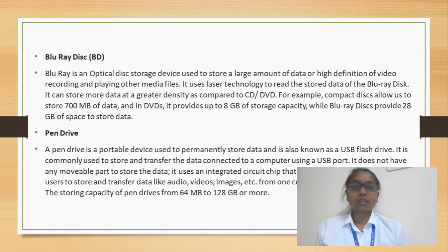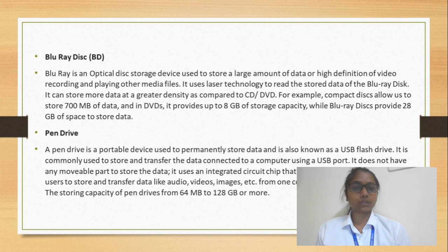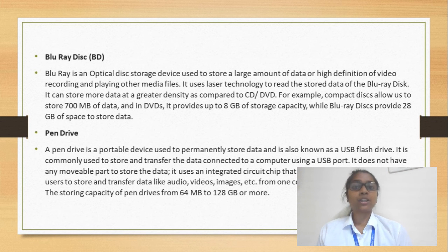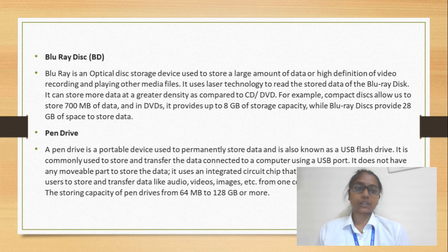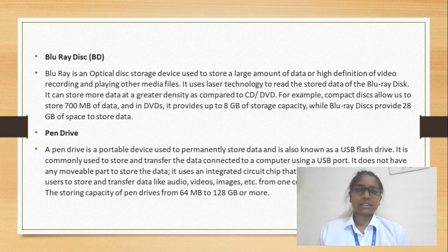The third optical storage device is Blu-ray Disc, which is similar to CD and DVD. The difference is that it has a much larger storage capacity, designed for high-definition audio and videos like HD content, requiring a lot of storage space. A Blu-ray Disc can store up to 128 GB. The last secondary storage device is pen drive, a portable device that permanently stores data, also known as a USB flash drive. It can store and transfer data from 64 MB and above.